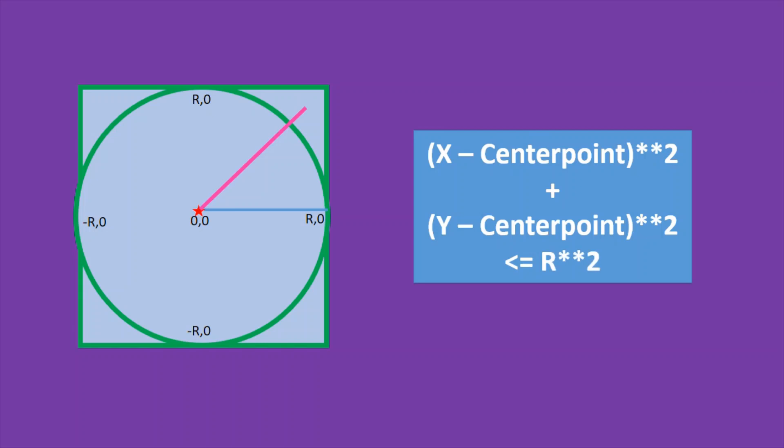The formula is (x coordinate of the point minus center's point) whole square plus (y coordinate of the point minus center point) whole square. If it is less than or equal to r squared, then it is within the circle.